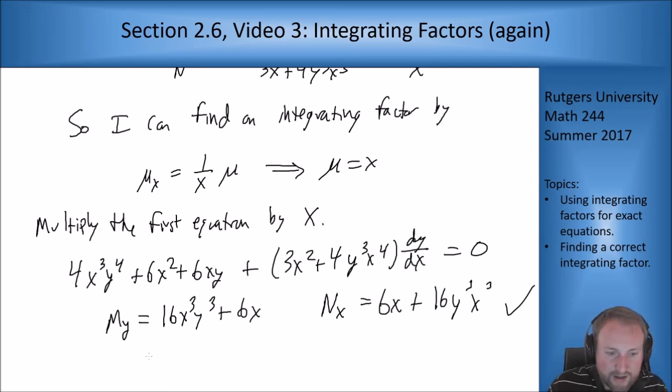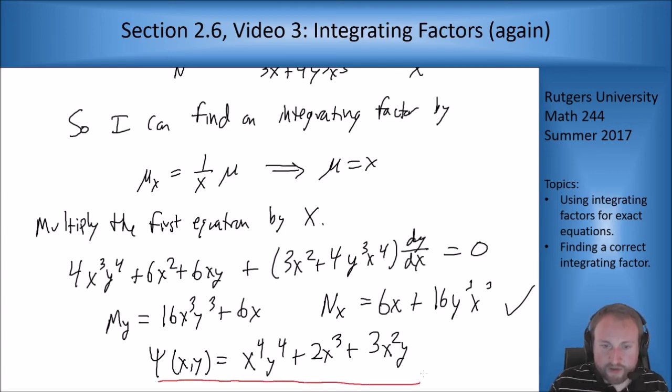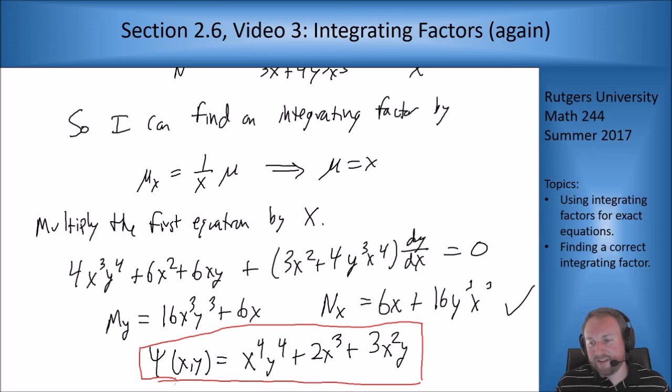And this I will actually leave to you. This ψ(x,y) that we get is x⁴y⁴ + 2x³ + 3x²y. This function, if you check it, if you take the x derivative, you get m. Take the y derivative, you get n. So in that case, we were able to find an integrating factor, multiply it to the whole equation and get something that was exact. It took a lot of steps to get there, which is what I meant by this being one of the trickier things. But it works. It turns an equation into an exact equation and then we can solve it.